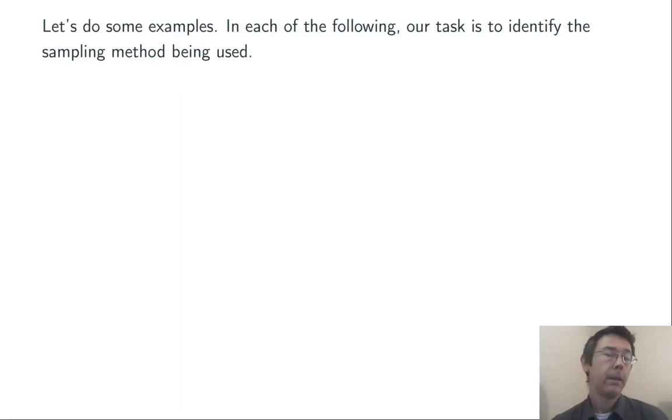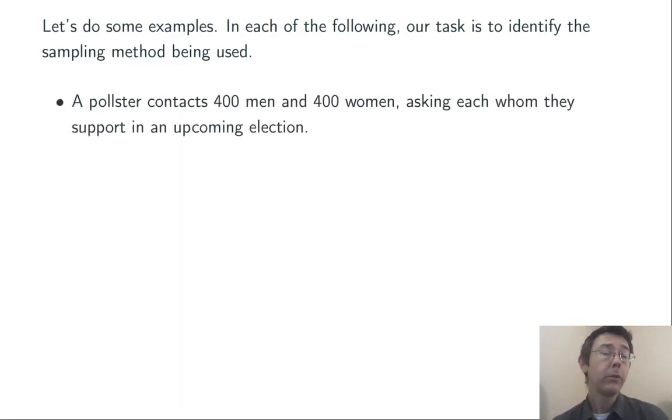Let's do some examples. In each of the four problems, we want to identify the sampling method that's being used. First, a pollster contacts 400 men and 400 women at random, asking each whom they support in an upcoming election.